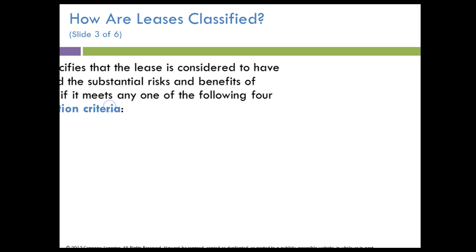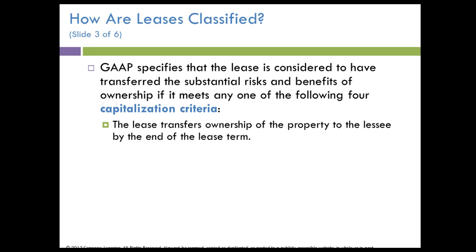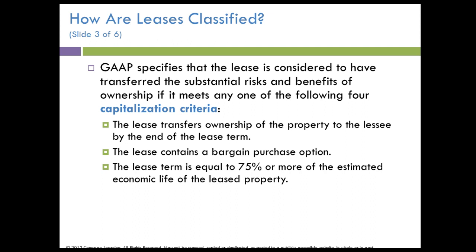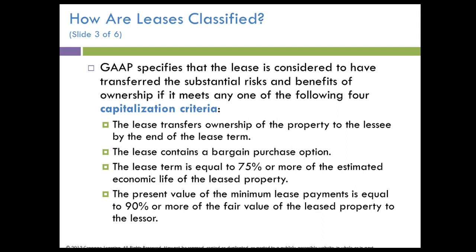As we look at the various guidelines for a capital lease, the capitalization criteria involve: the lease transfers ownership of the property to the lessee by the end of the lease term; the lease contains a bargain purchase option; the lease term is equal to 75% or more of the estimated economic life of the leased property; and the present value of all the minimum lease payments is equal to 90% or more of the fair value of the leased property. If any one of these criteria is met, it will be classified as a capital lease.